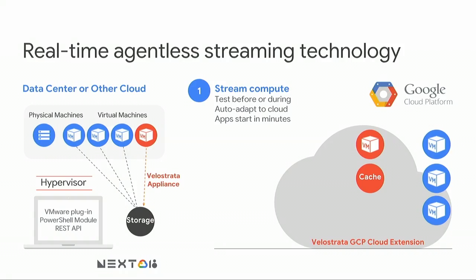Let's talk about the product — how does it really work? There are two fundamental concepts underlying the Velostrata technology. Number one: we offer the ability to take stateful, large workloads running on-premises and literally within minutes have them running in the cloud, fully operational, irrespective of the size of attached data or WAN latency. We call this streaming, in analogy to video streaming — you don't have to download the entire video file to start watching it. Similarly, you don't have to replicate all the data to the cloud to start computing.